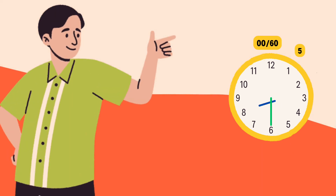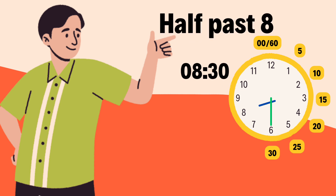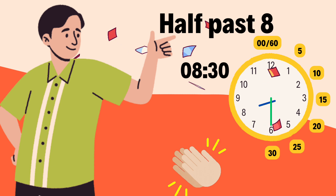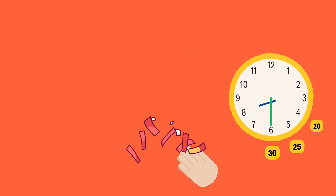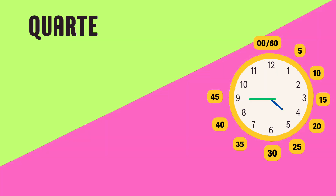If the hour hand is on eight and the minute hand is on six, what's the time? The time is half past eight. Fantastic job — you're understanding time so well!